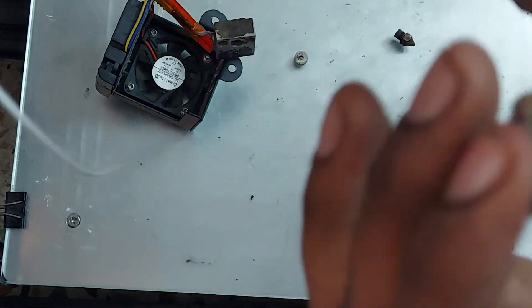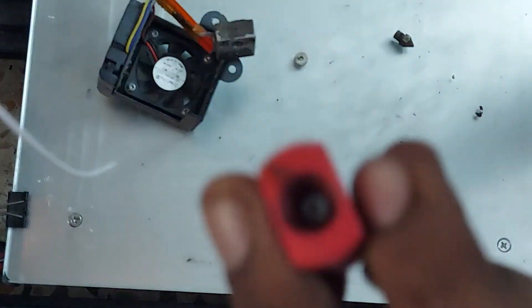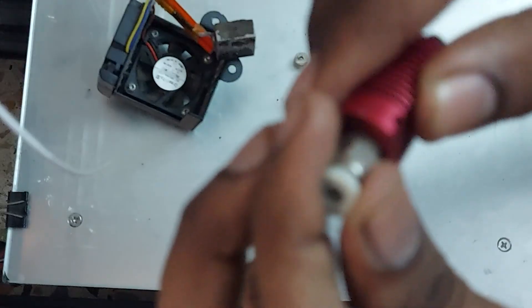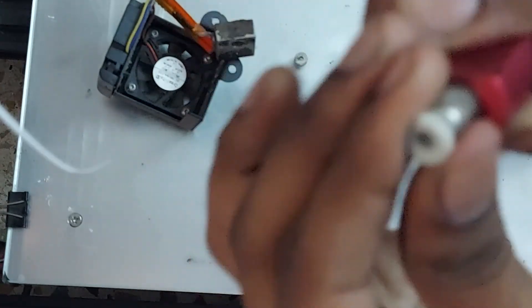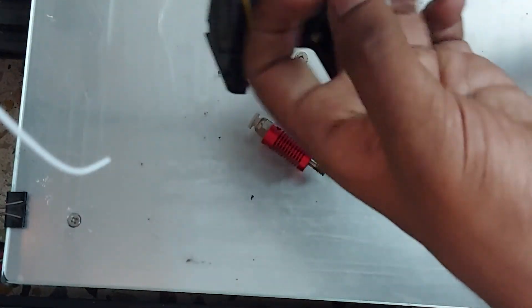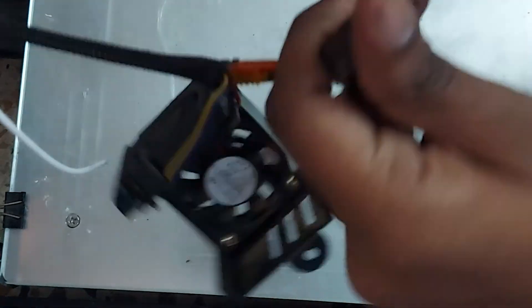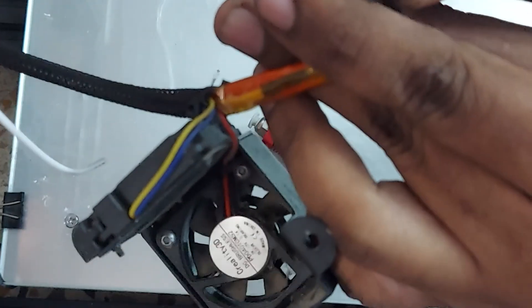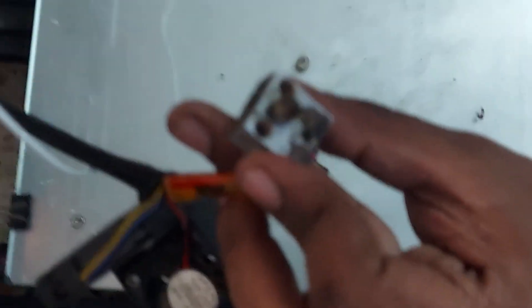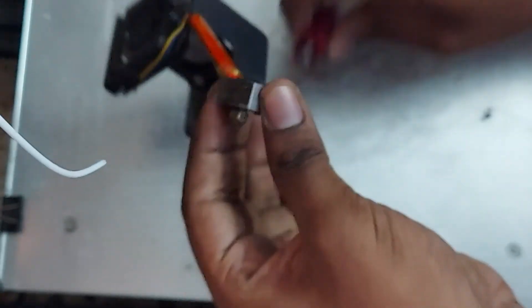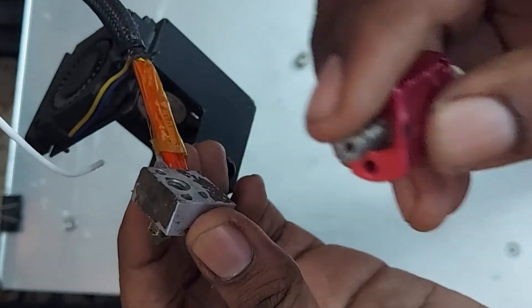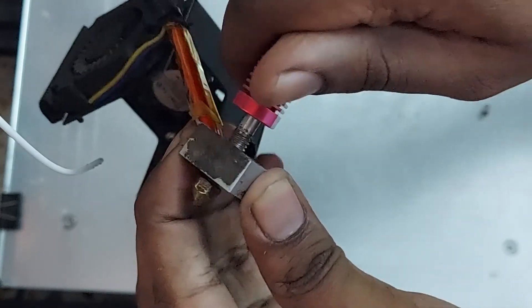You can screw this - there's a thread inside. You can just screw like this. You can screw this nozzle. And I'm going to take this and screw this heat break inside this heater block.